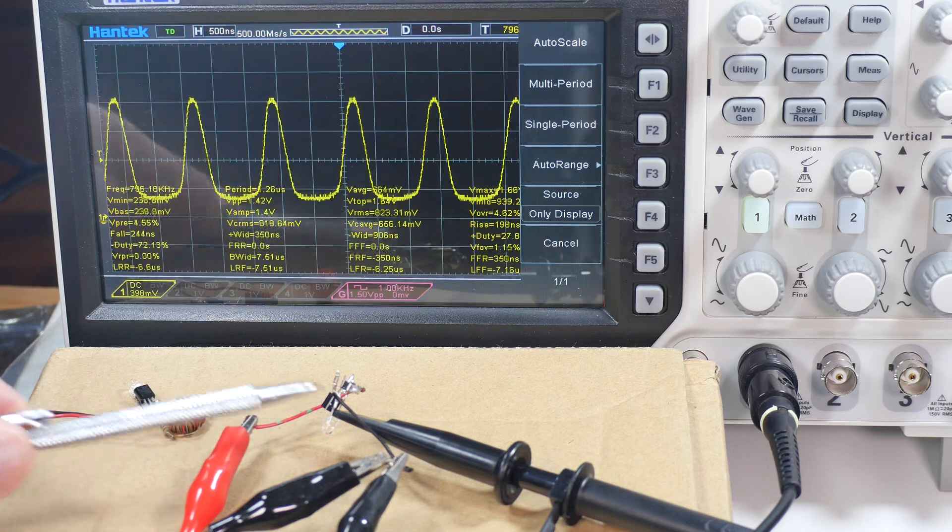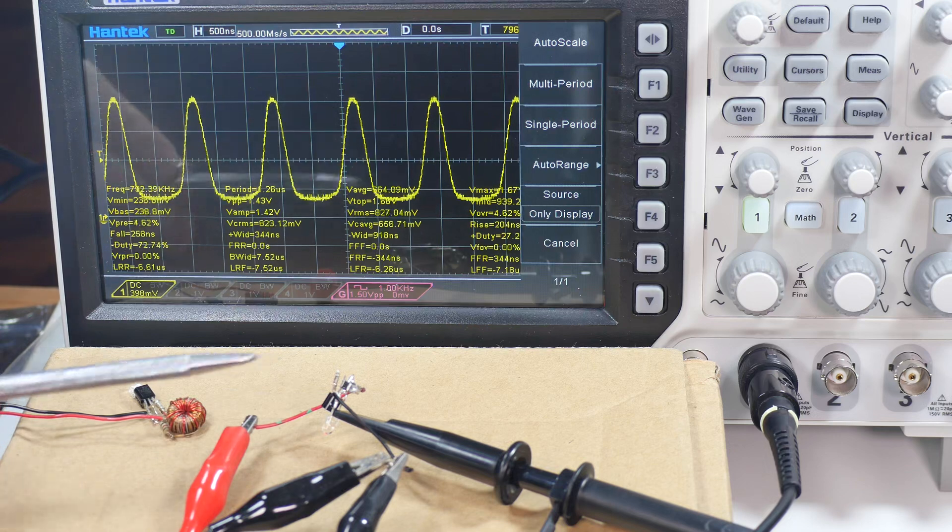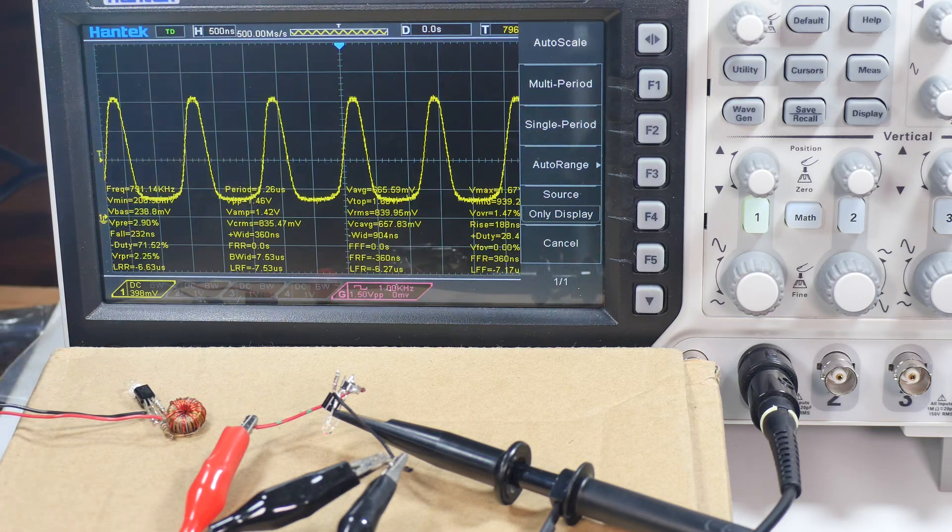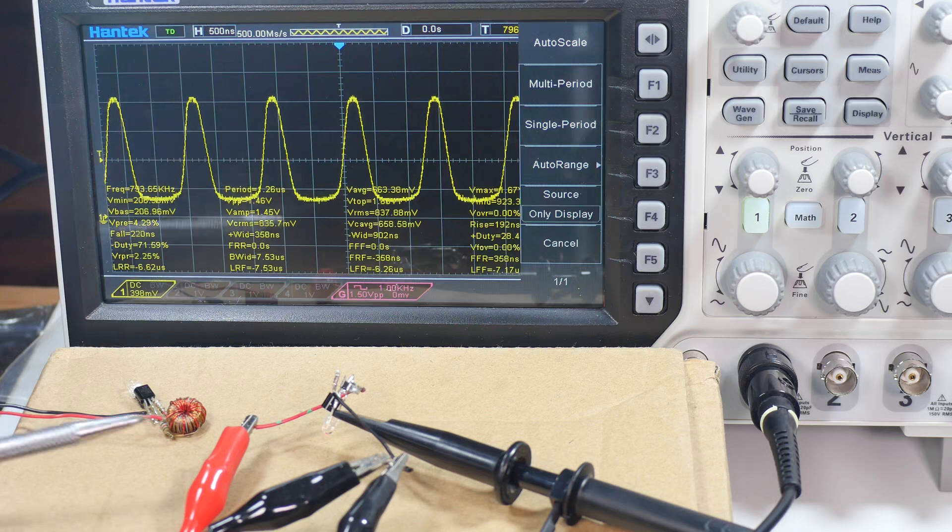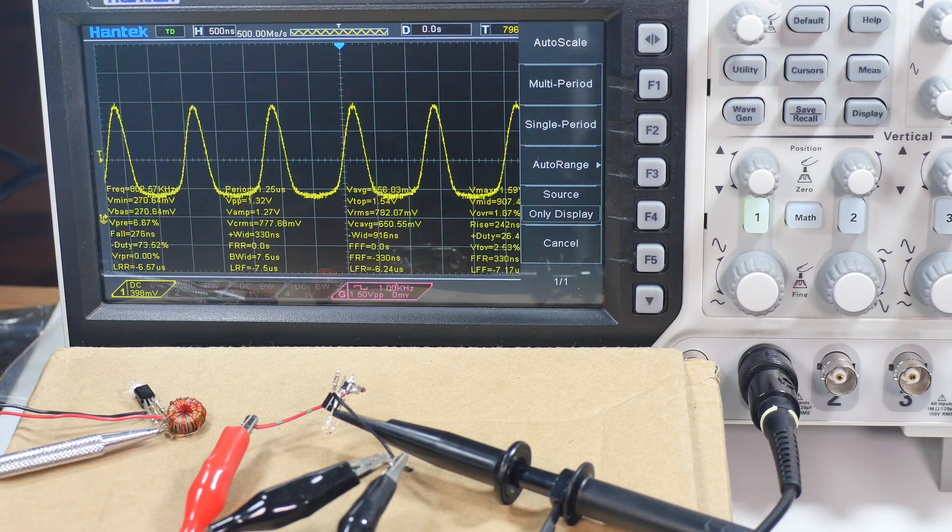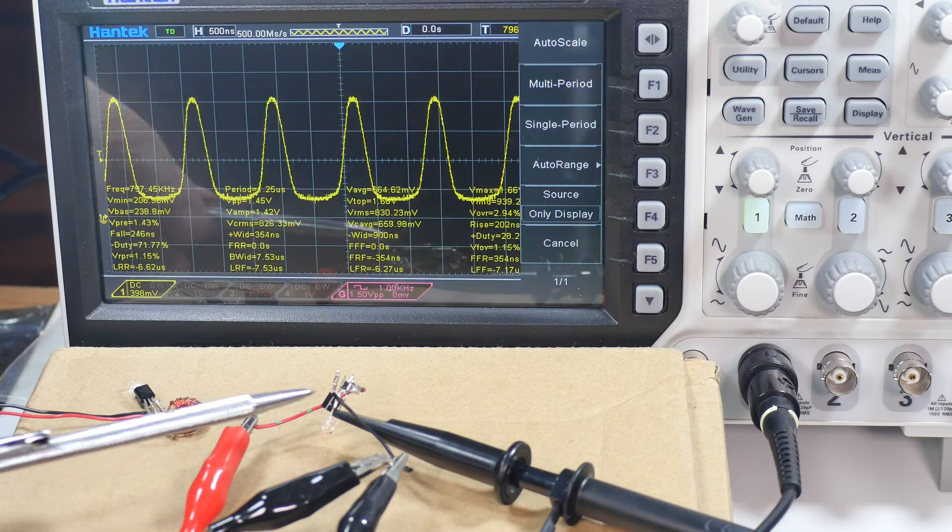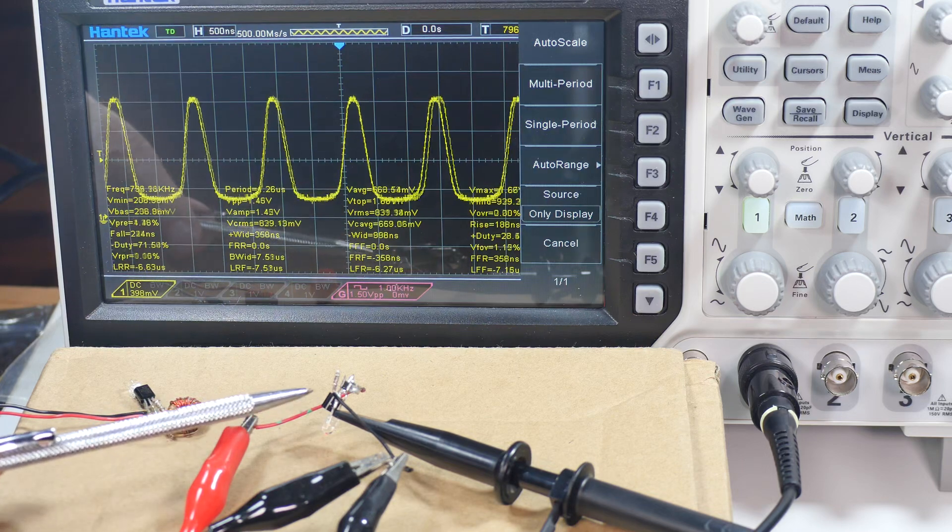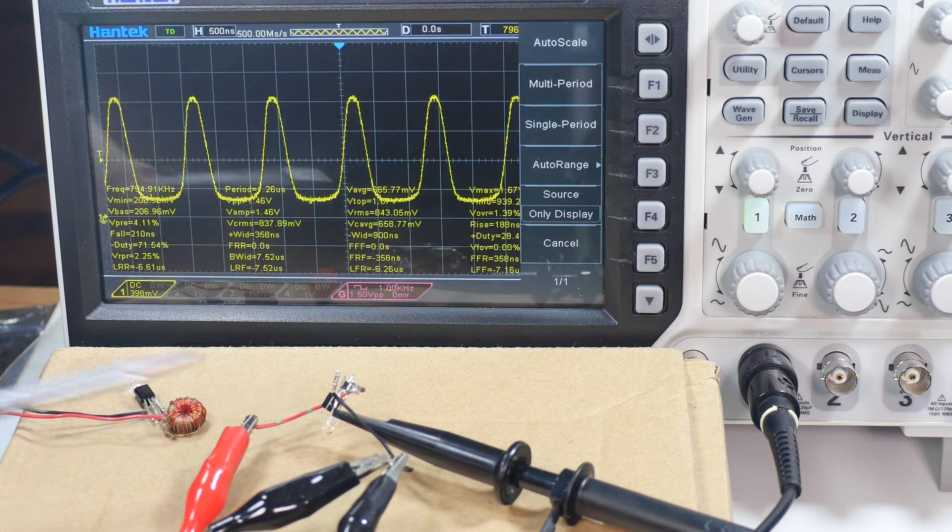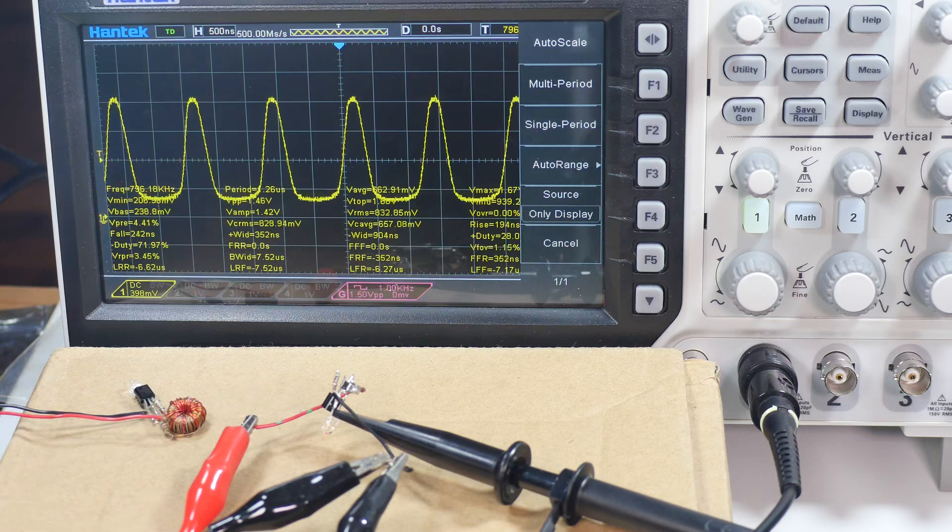This is a short video, just thought you might find it interesting the difference in frequency operation between these toroid coil type joule thieves and an SMD inductor type oscillator. I hope you found that useful and interesting in your home electronic experimentation.